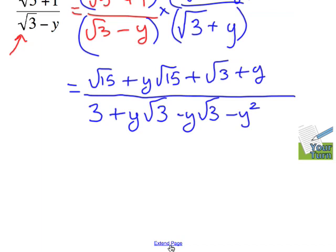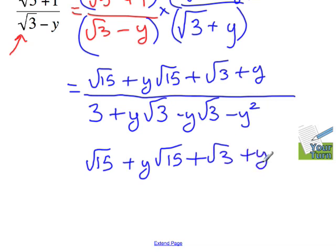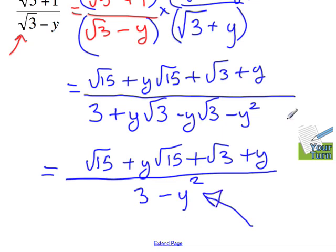So simplifying a little bit, I guess I maybe could use the distributive property to get those together, but I'm just going to leave them. Root 15 plus y root 15 plus root 3 plus y. Not a whole lot that I could do up there at the top. But on the bottom, notice that these cancel out. So I'm left with 3 minus y squared. And although it looks a little bit ugly, I'm real happy now because I don't have a radical on the bottom.